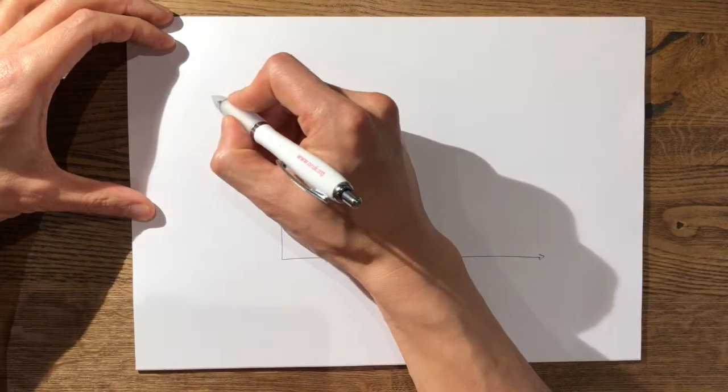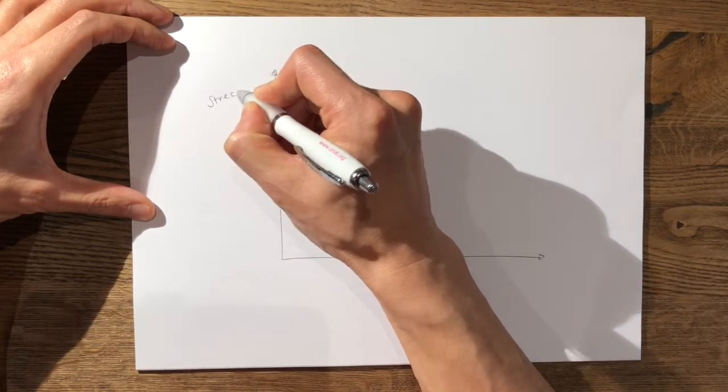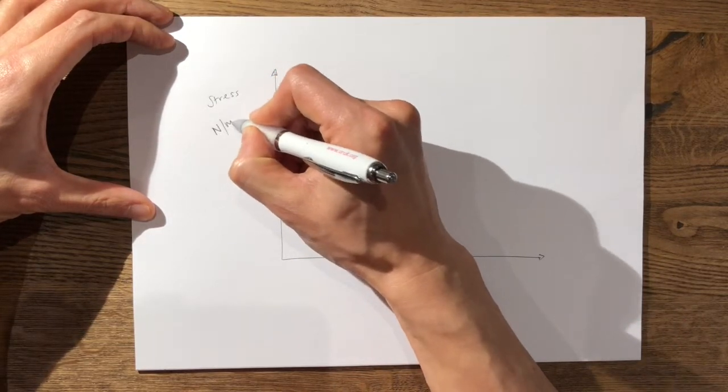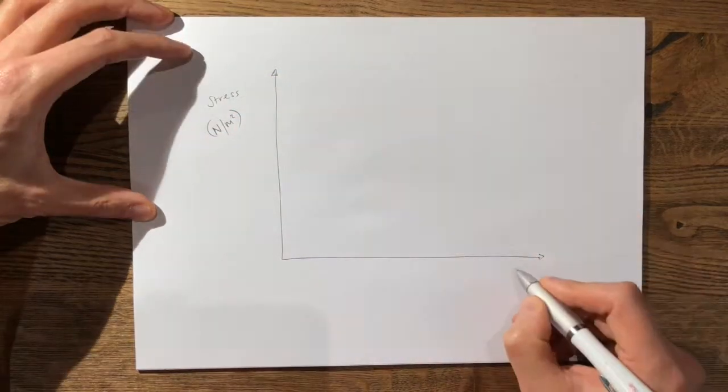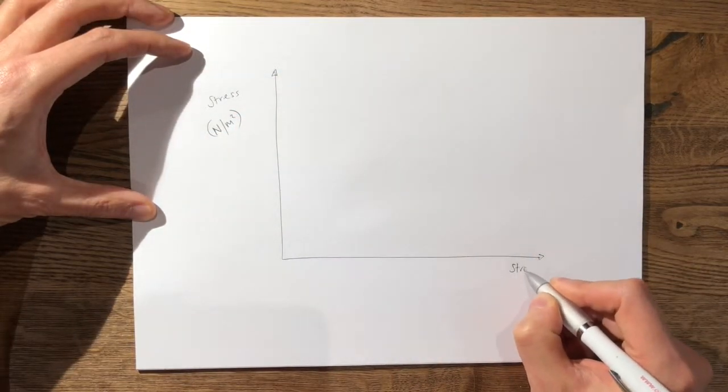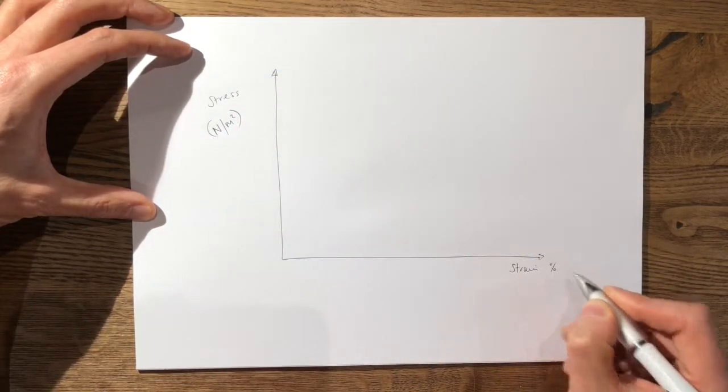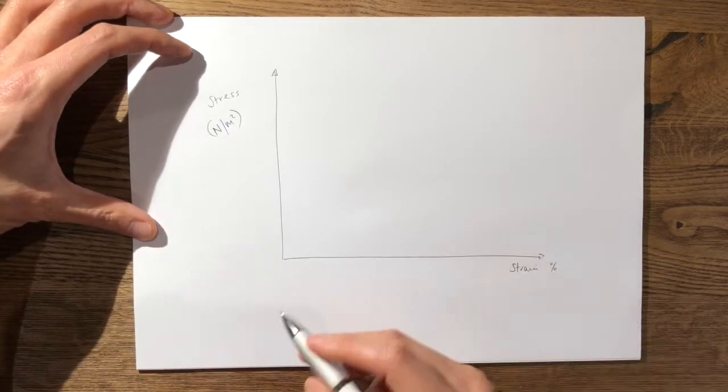So you all know the axes by now. On the y-axis you have stress which is in newtons over meter squared and on the x-axis you have the strain which is a percentage change in length over the original length.